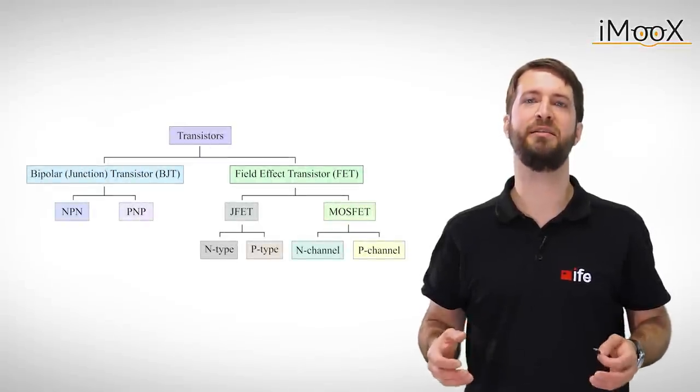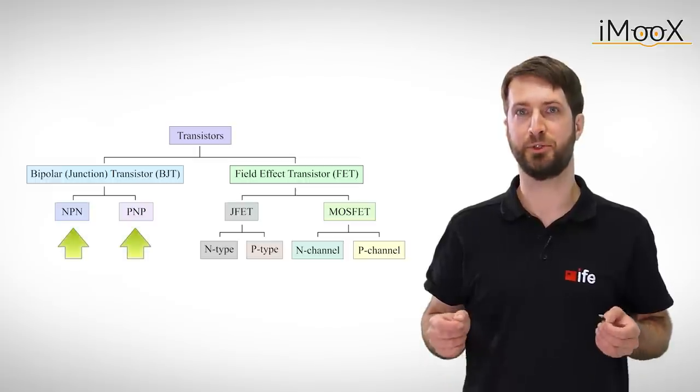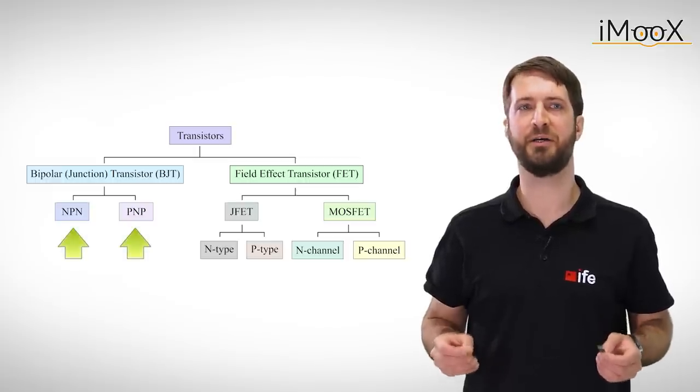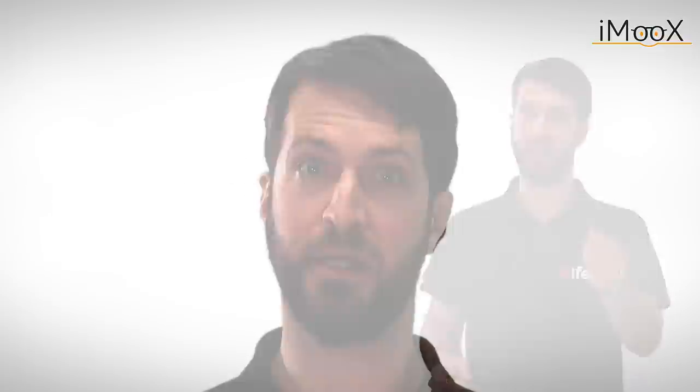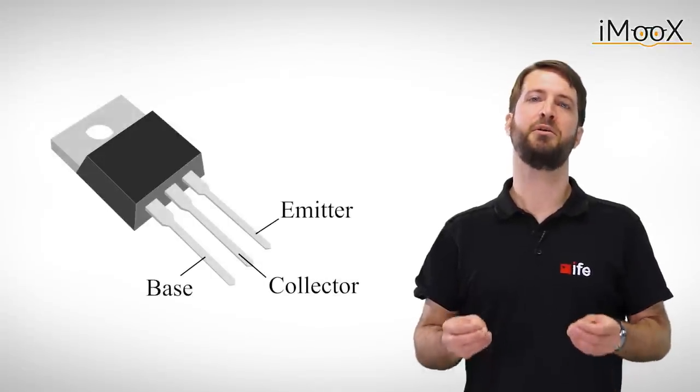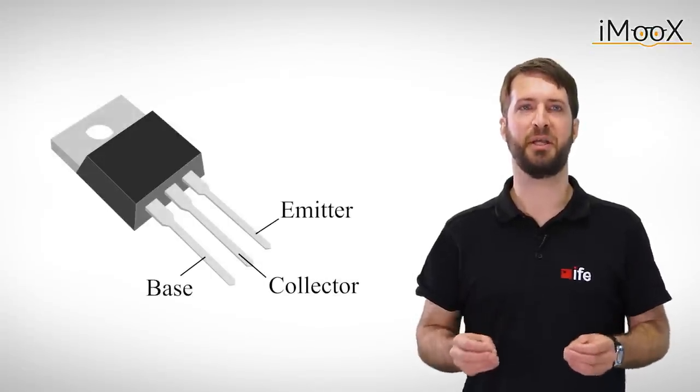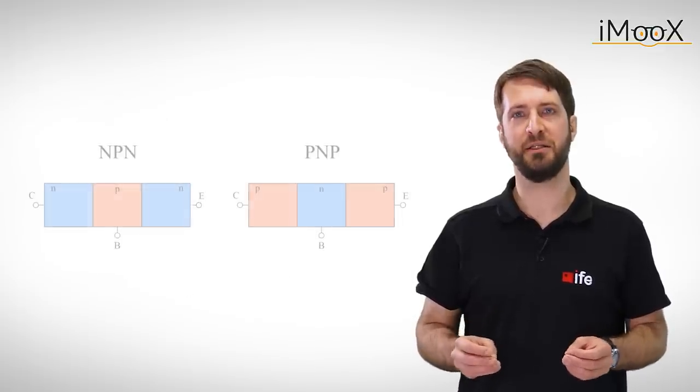Today there is a big variety of transistors available on the market. To simplify our deliberation of transistor amplifiers we will focus on a rather simple to explain bipolar transistor. A transistor has three terminals called emitter, collector and base. There are two kinds of bipolar transistors, NPN and PNP.